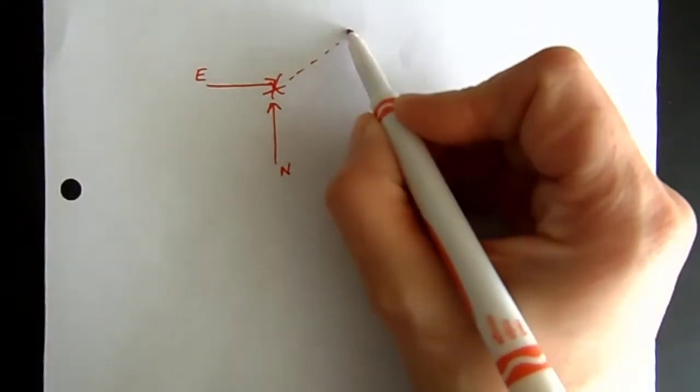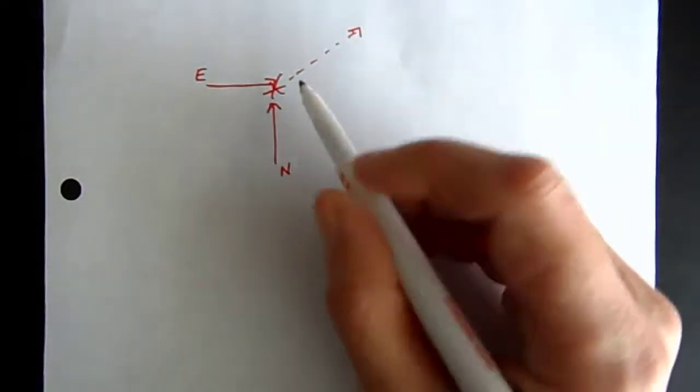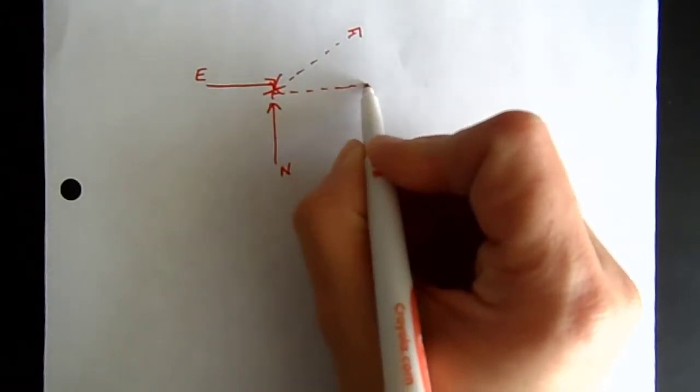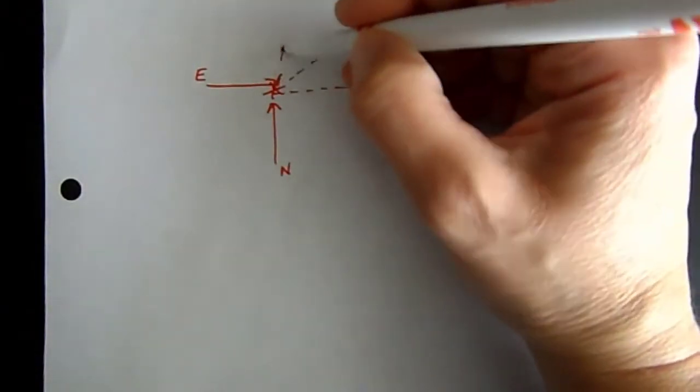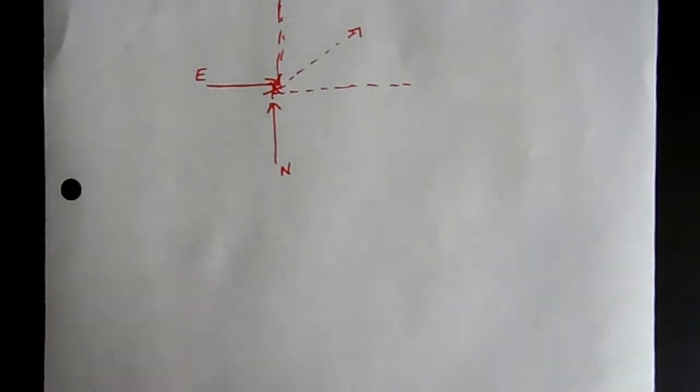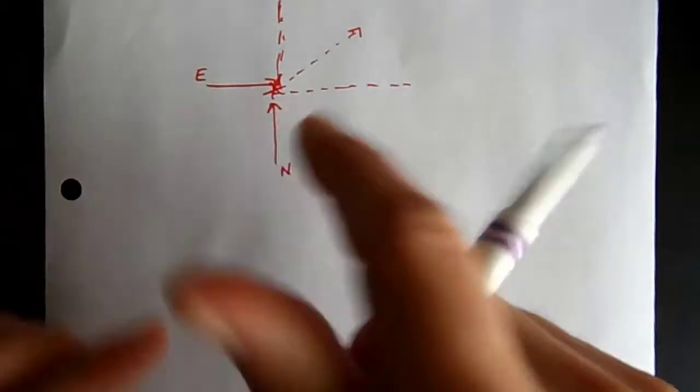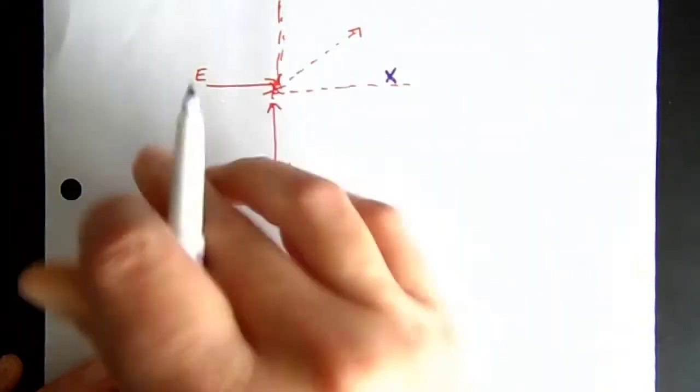If we're interested in the momentum of both cars after the collision, we can solve for that because we have some x component and some y component. Car A is traveling to the east, so we can say it is traveling along the x axis. This means its momentum has no y component — all of its momentum is in the x component.